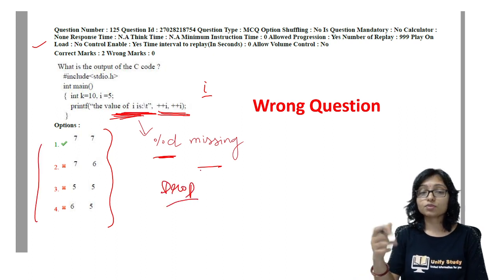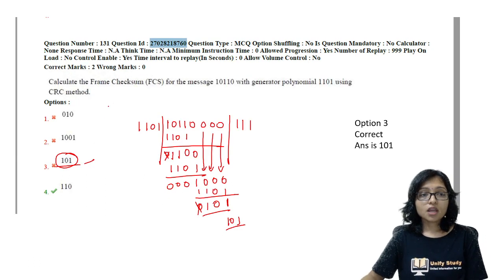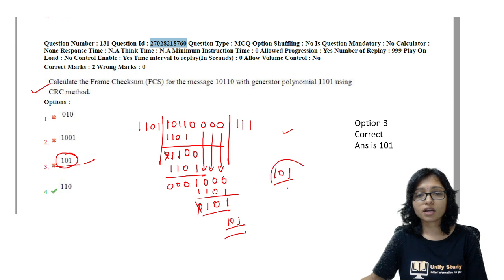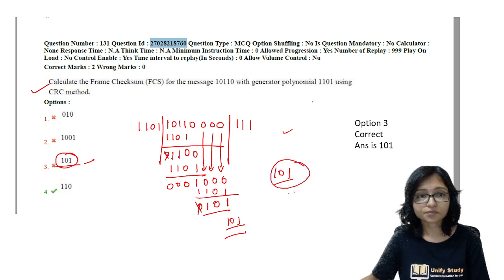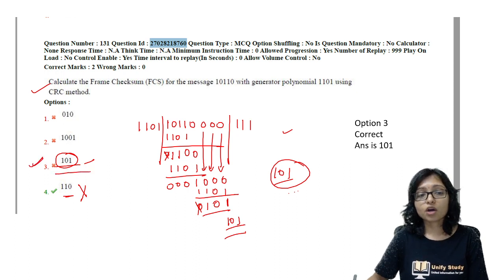The CRC question answer is wrong. I did this CRC question and the answer is coming 101. The answer should be 101, but here the answer is given 110. This is the wrong option. Option 3 should be correct. Those who marked option 3, you can go for challenge. This is the correct answer and I did it.